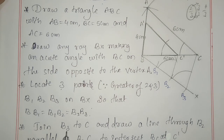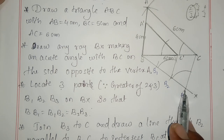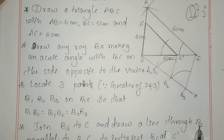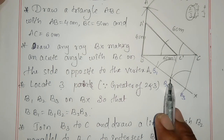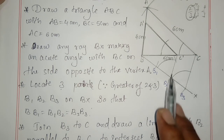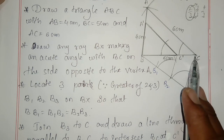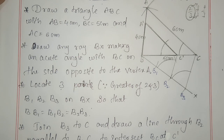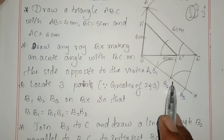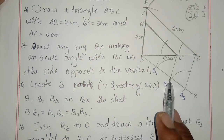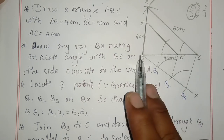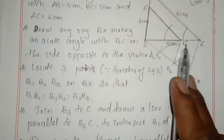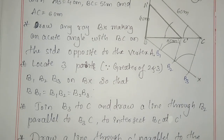Step four — join B3 to C. Draw a line through B2 parallel to B3C to intersect BC at C'.